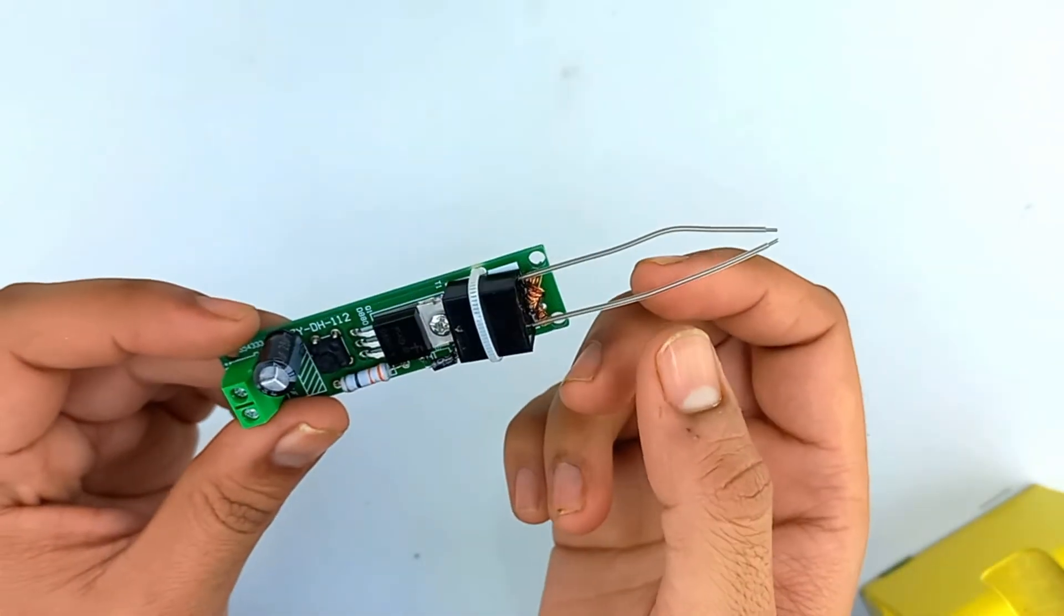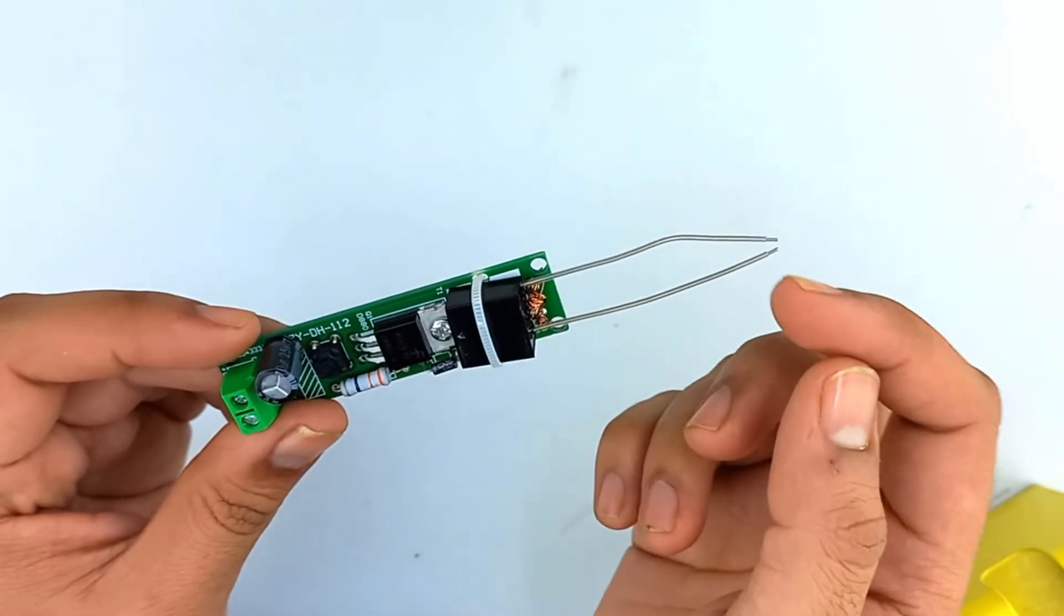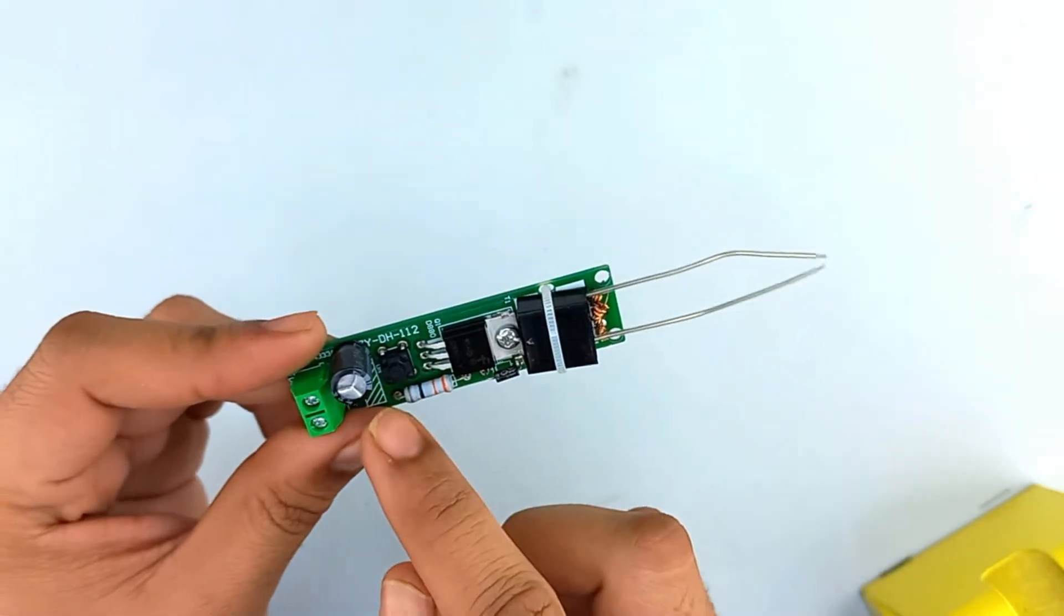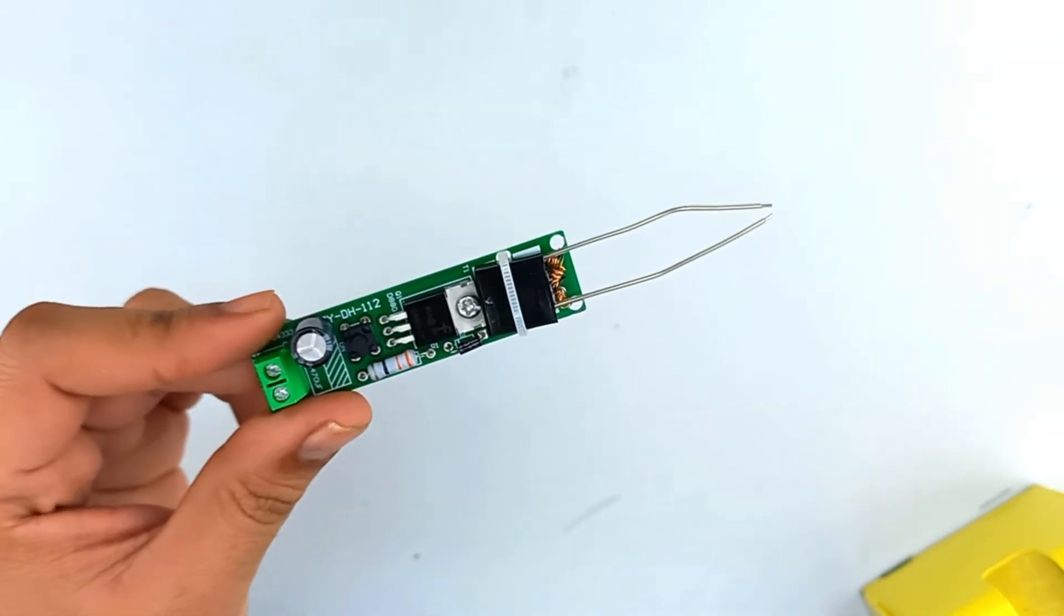The arc will establish at these two tips of the wire on pressing the push button. Now let's plug in the battery.